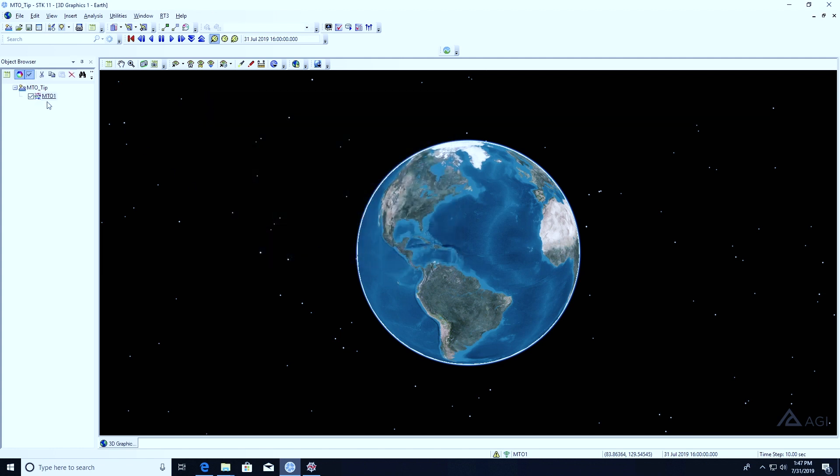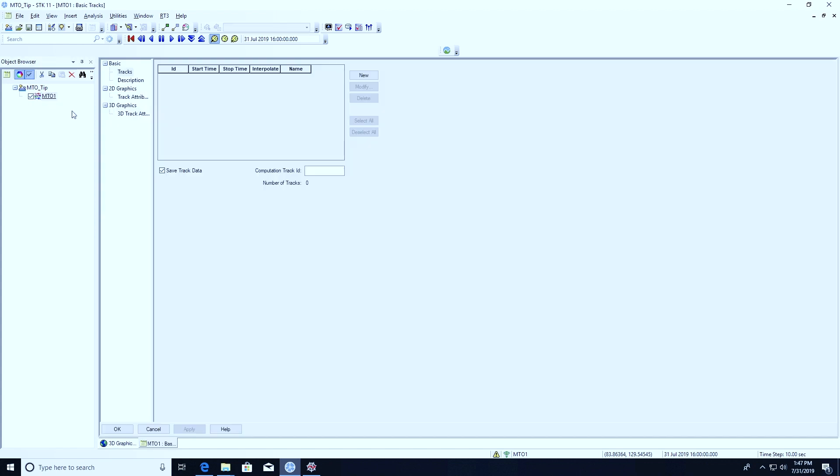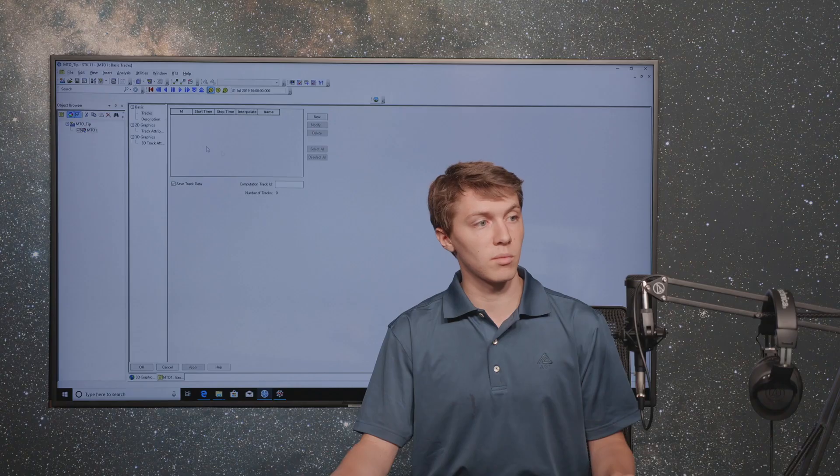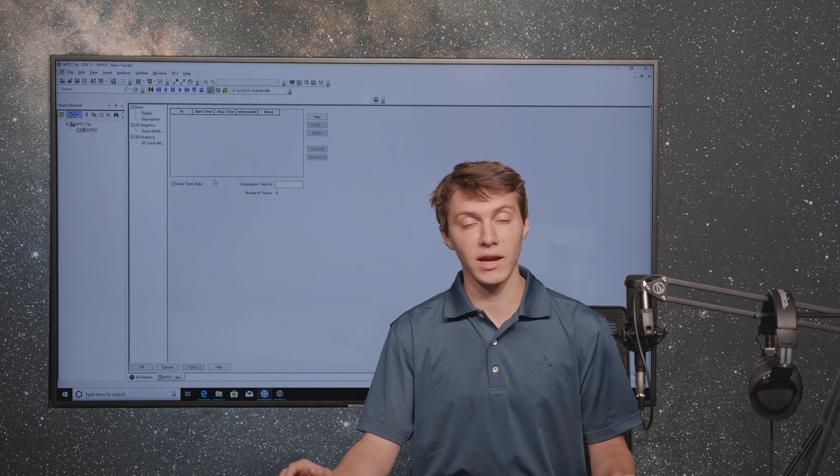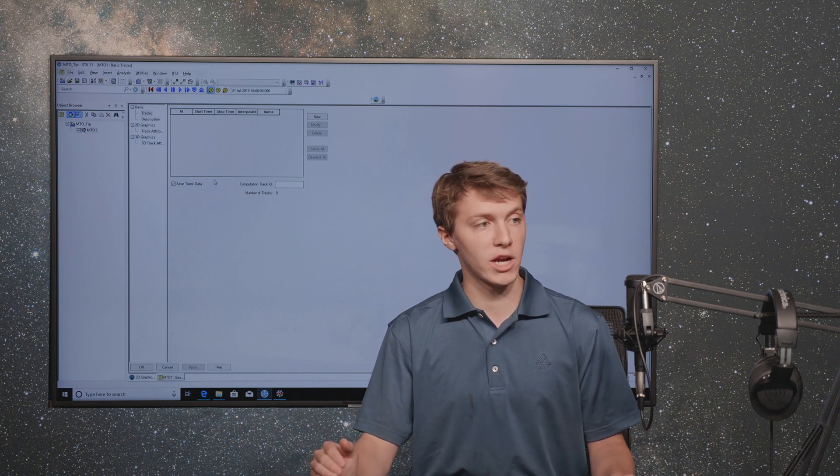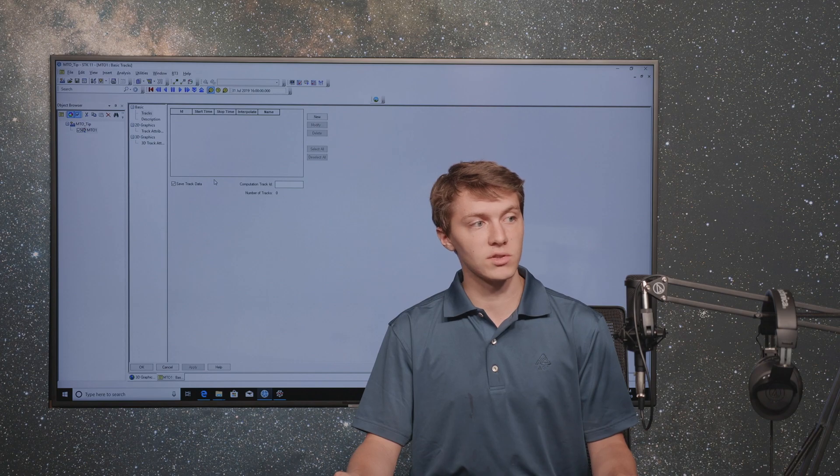If I close out the Insert Object menu and bring up the properties of the MTO, you'll notice that there's nothing populated here. You have to actually manually add in the tracks or trajectories of the vehicles. Another great advantage of MTOs is that you can use them to model tracks or routes of any kind of vehicle. It doesn't have to be a satellite. It could be an aircraft, a boat, a ground vehicle. Anything that moves through space could be represented with an MTO, again, only visually.